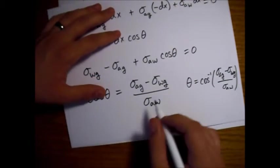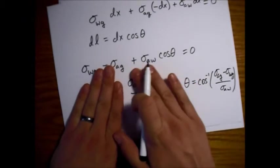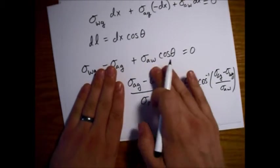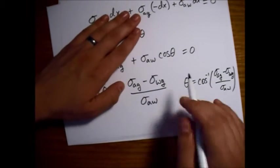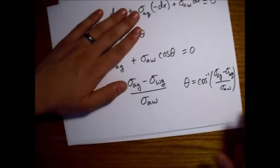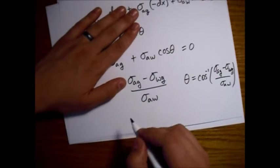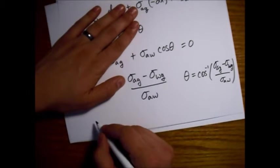So when this equals one, then we know we've met our, that's the critical values of these surface tensions to get a complete film of water on our surface. And that would mean...